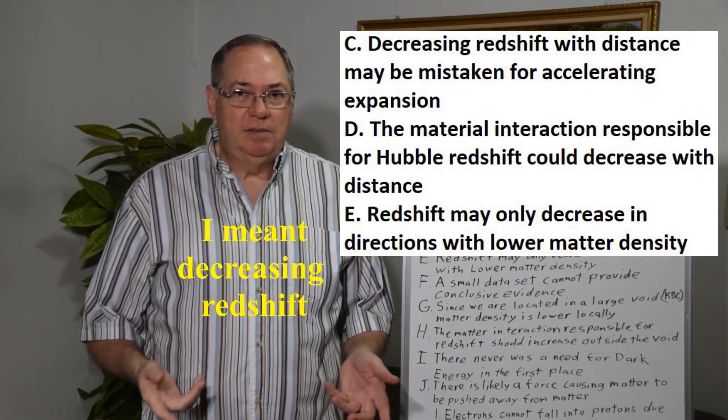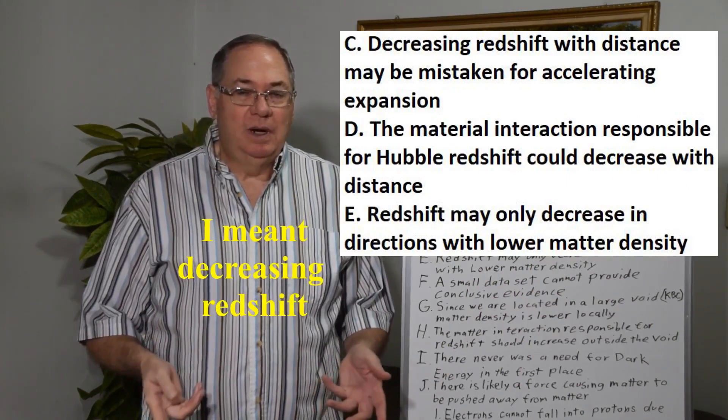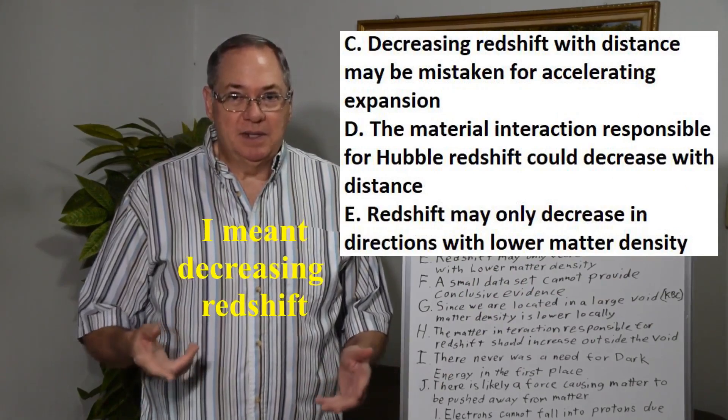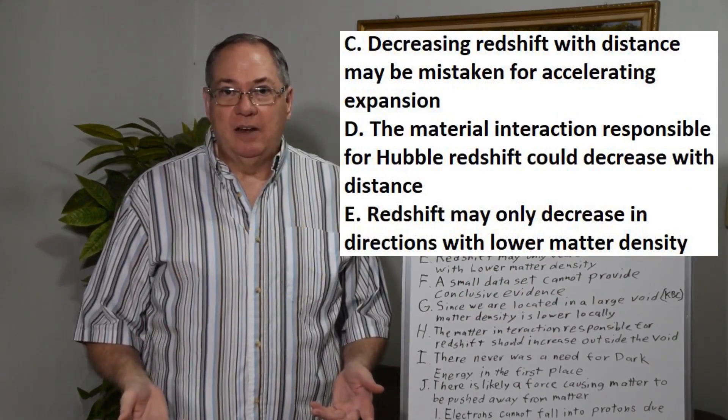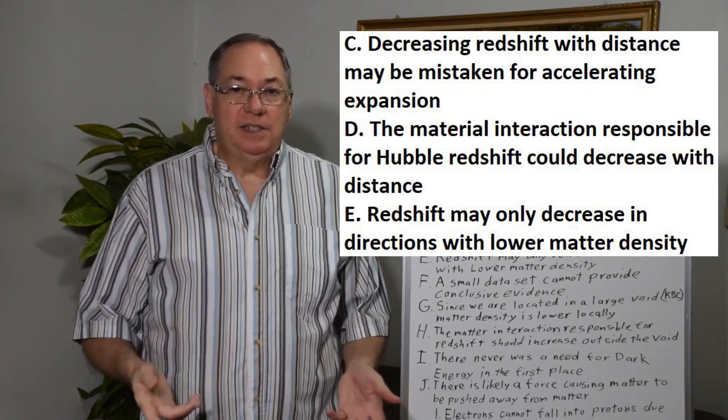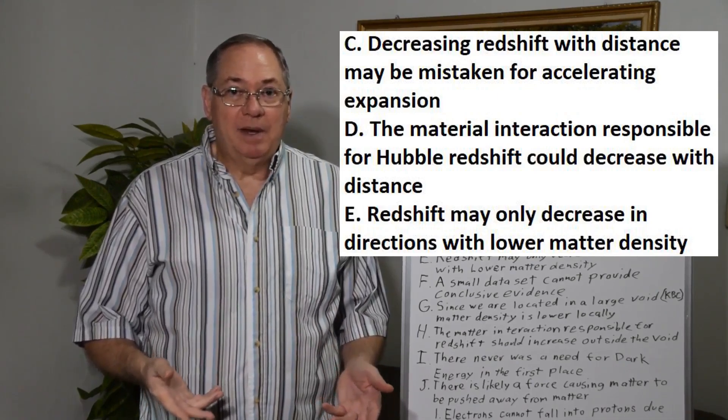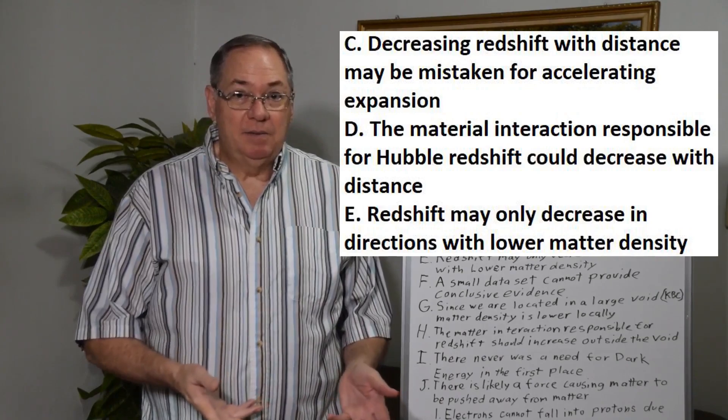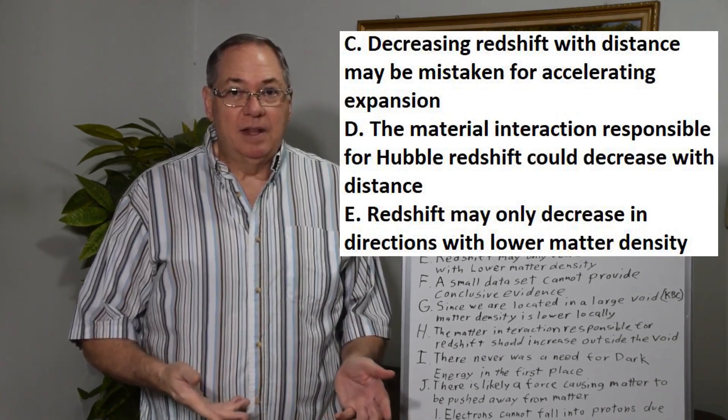So increasing redshift was mistaken for expansion that was accelerating, requiring dark energy. But it's redshift that is the thing that's actually happening, the real evidence that we see rather than the theory.